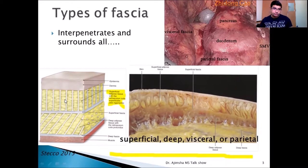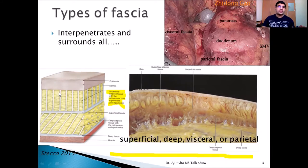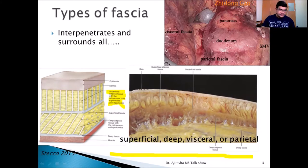There are two more structures I want to introduce. The first is a ligament whose function is to prevent excessive sliding or moving away of the skin or superficial fascia — this is called the retinaculum cutis superficialis. There is another ligament between the superficial fascia and the deep fascia — this is called the retinaculum cutis profundus.